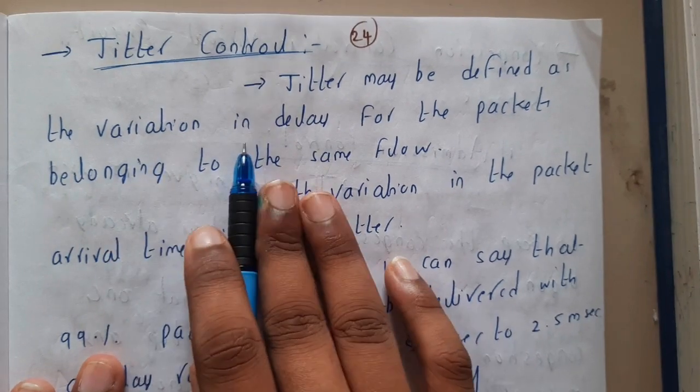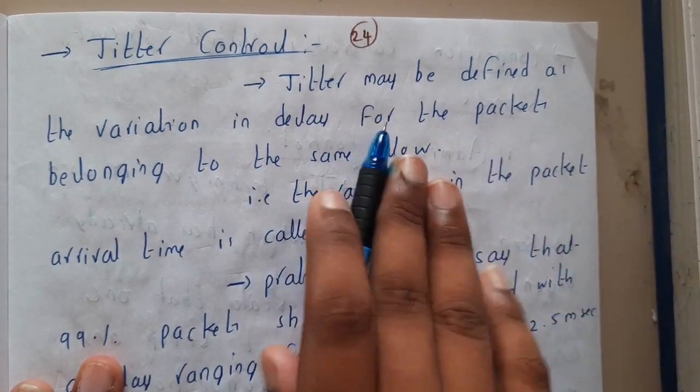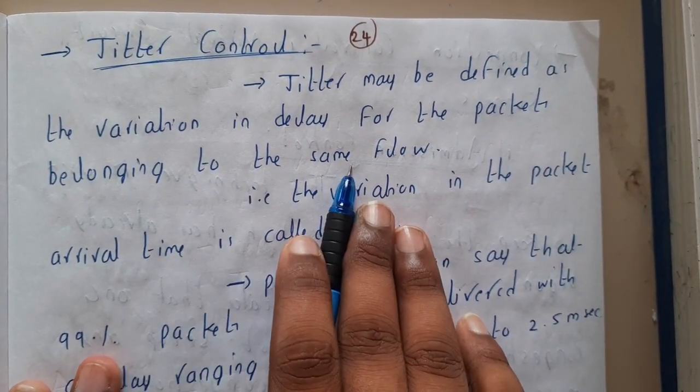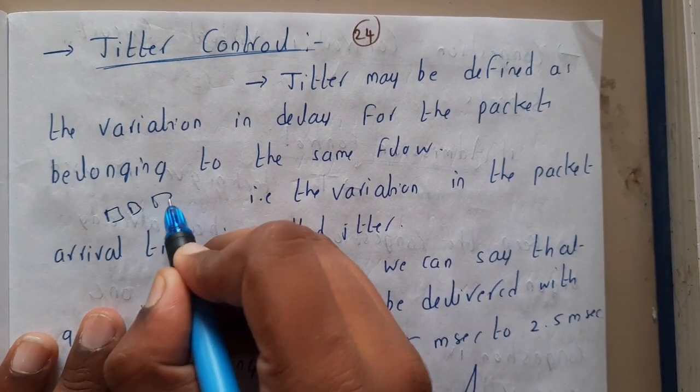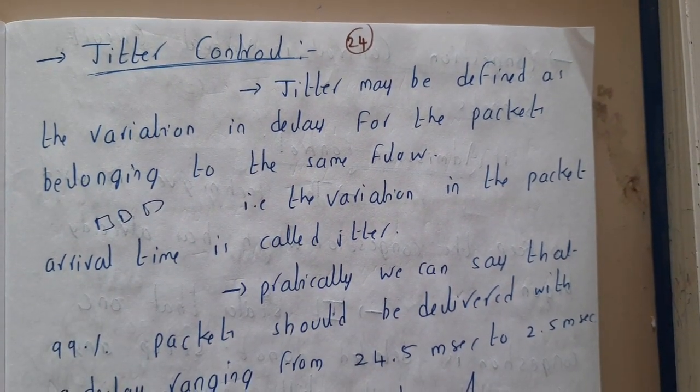Jitter may be defined as the variation in delay for the packets belonging to the same flow. So assume that there are multiple packets going. Due to some situations there could be some delay, right?